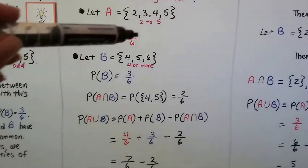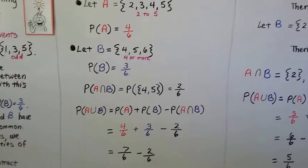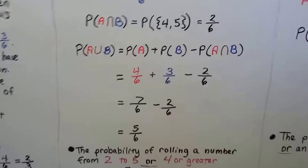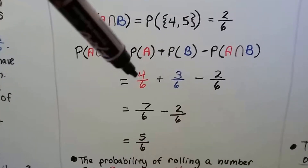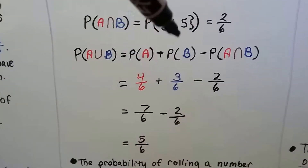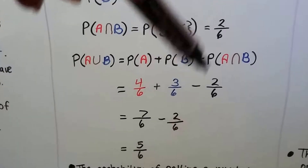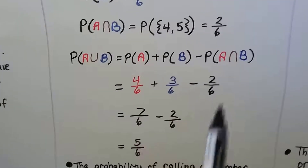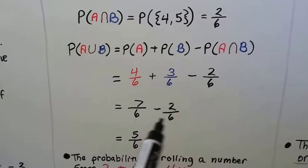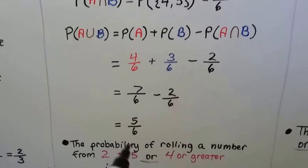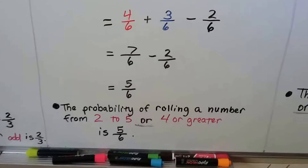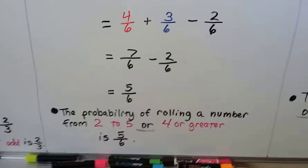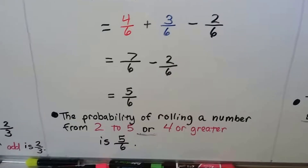Now we do 4/6 plus 3/6 and subtract 2/6. The probability of A is 4/6 plus the probability of B is 3/6, minus the intersect of 2/6. We get 7/6 minus 2/6, which is 5/6. So the probability of rolling a number from 2 to 5 or 4 or greater is 5/6.